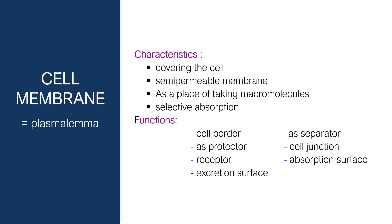Cell membrane — also known as the plasmalemma. The characteristics of the cell membrane are that it covers the cell, it is a semi-permeable but selective membrane, and it is a place for taking macromolecules from outside the cell into the cell and for selective absorption. If the cell membrane were only semi-permeable, all liquid would enter the cytoplasm causing cell swelling, but due to its selective characteristics, this will not happen. The functions of the cell membrane include acting as a cell border separating one cell from another, as a protector, as a cell junction, as a receptor, and as a place for absorption and excretion.